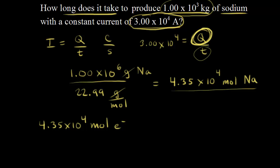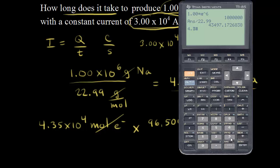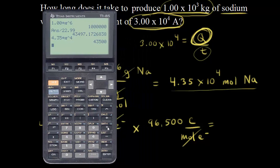We're trying to find charge. We can go from moles of electrons to total charge using Faraday's constant, which is the charge carried by one mole of electrons: 96,500 coulombs per mole of electrons. So we multiply 4.35 × 10⁴ by 96,500.